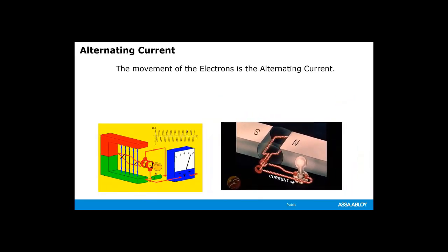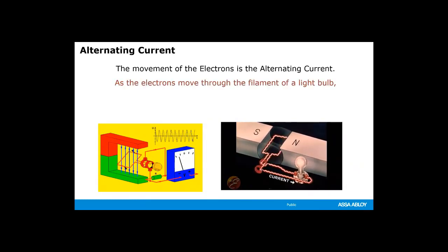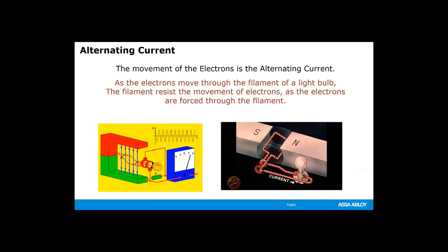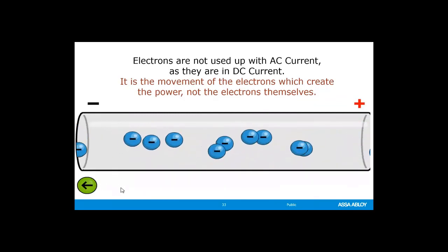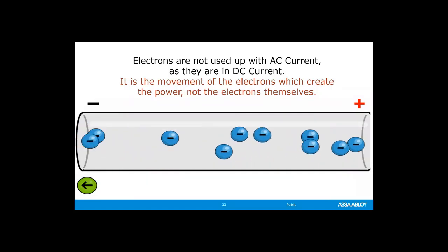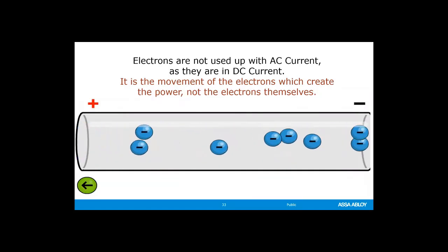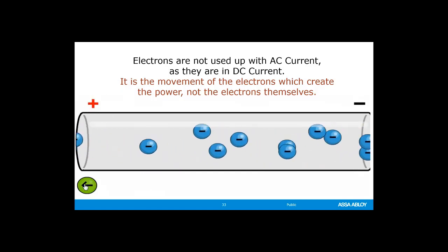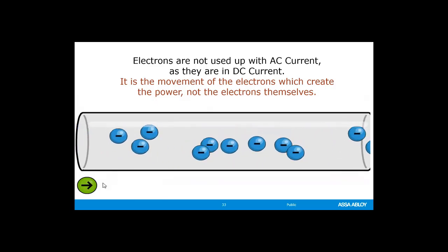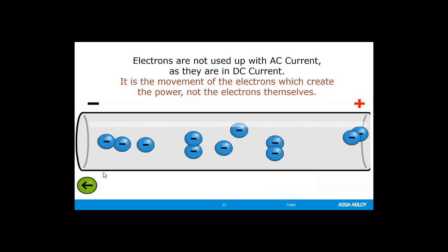The movement of the electrons is the alternating current. As the electrons move through the filament of the light bulb, the filament resists the movement of these electrons, and the electrons are forced to move through the filament. The filament will start to heat up and glow to produce light. One unique thing with AC current is that the electrons are not used up as they are with DC current. Since the electrons are shuffling back and forth, you're using the same electrons all the time — it's the movement of the electrons within the circuit that actually creates the power, not the electrons themselves.